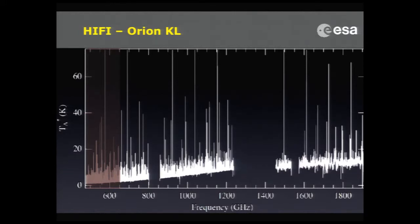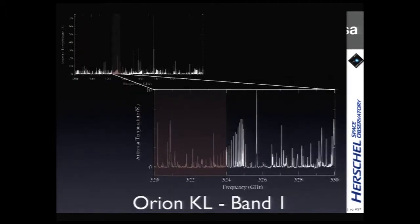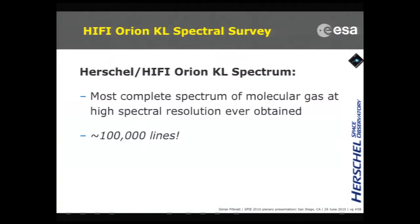If you really want to go into the spectral regime, the shock and awe of Herschel is the HIFI instrument. Here is a spectrum of the Orion KL nebula over the entire HIFI range. If you zoom in onto a small part of it, it looks just the same; zoom in again — still the same; zoom in again — and now you can see the lines and line shapes. This is a project by Ted Bergin, and in his spectral scan there are 100,000 lines. This is the most complete spectrum of molecular gas at high spectral resolution ever obtained.